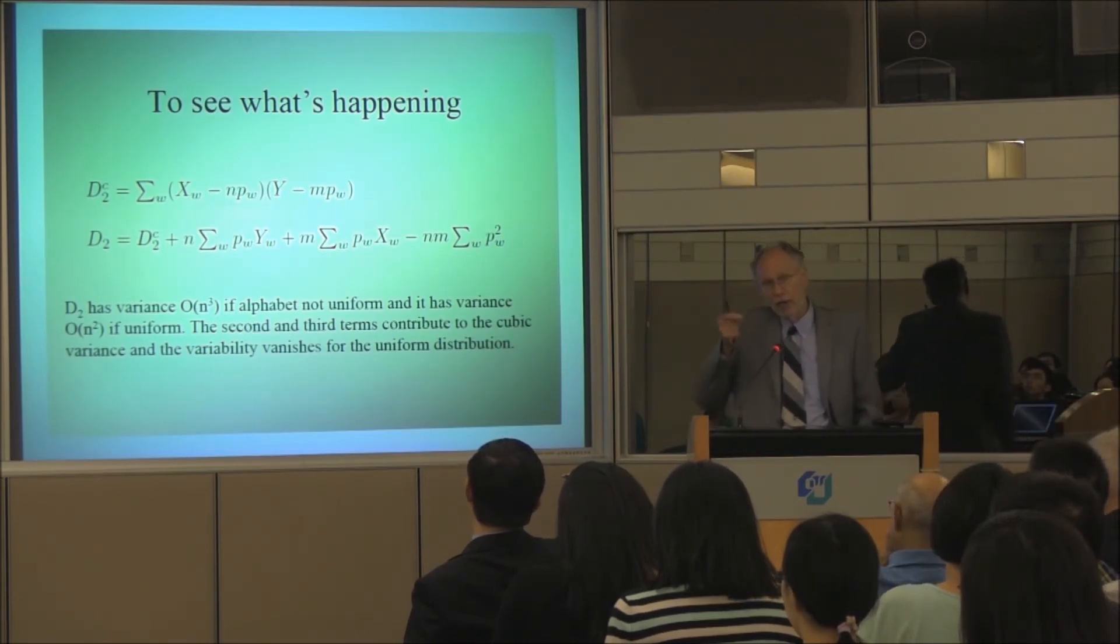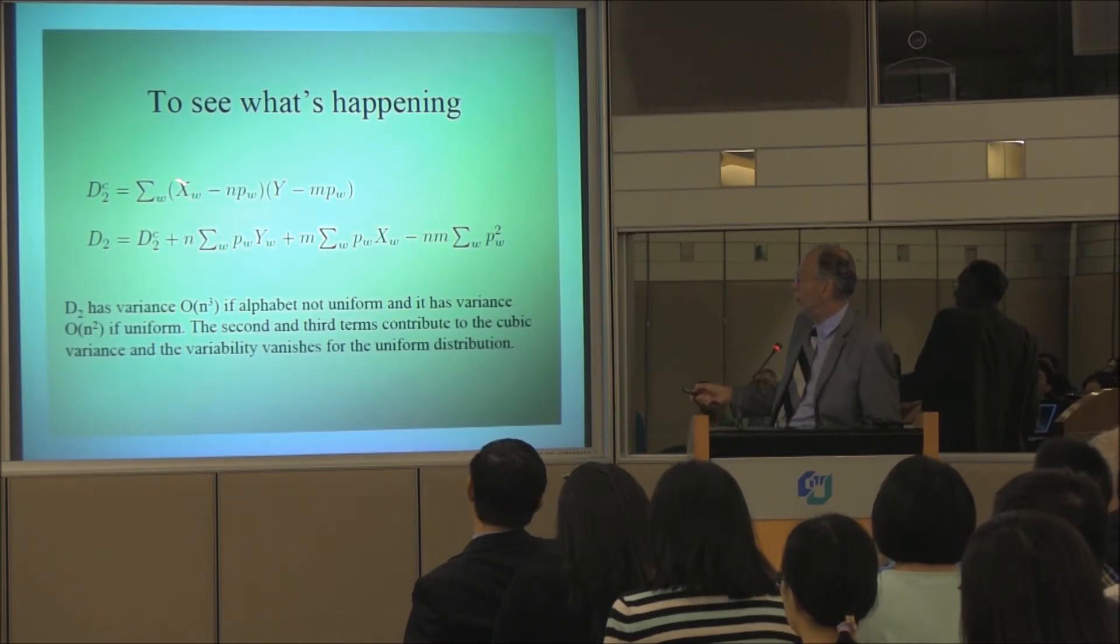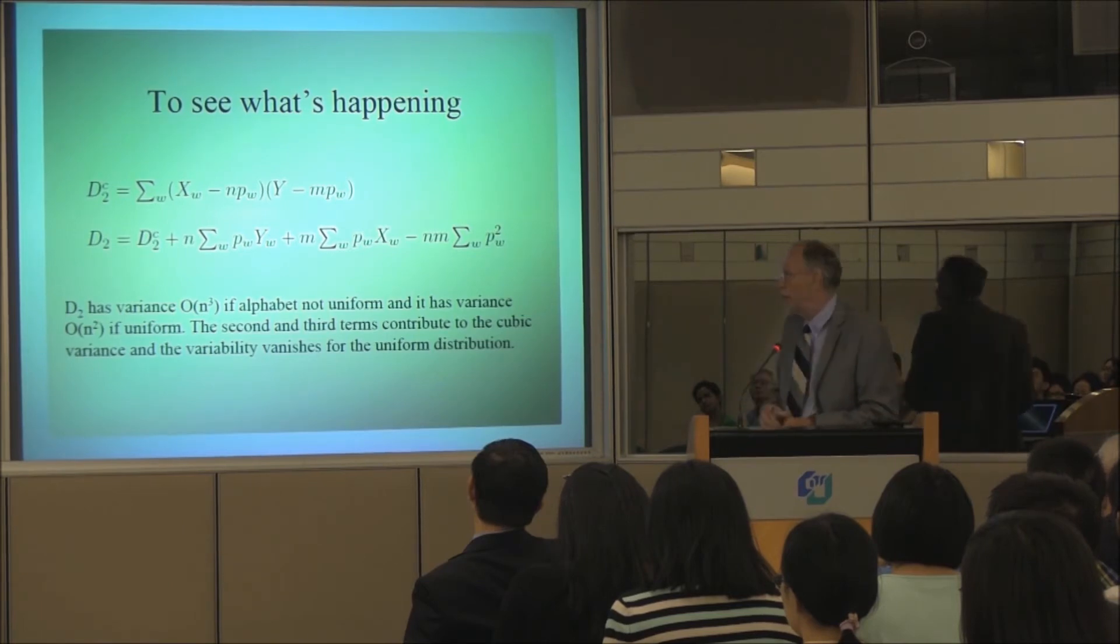I can show you what's going on. Statisticians love to center things, subtract the mean. So if we do D2 centered, we take the numbers in the X sequence or A sequence, subtract the mean, numbers in the Y sequence, subtract the mean. And then we write out D2 this way. It almost gives you a clue of where the problem is.